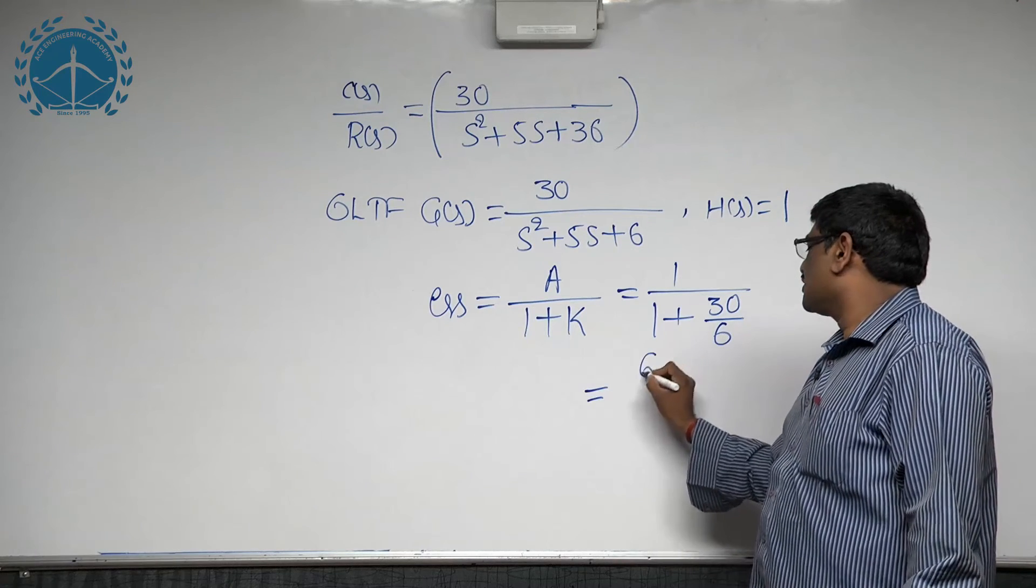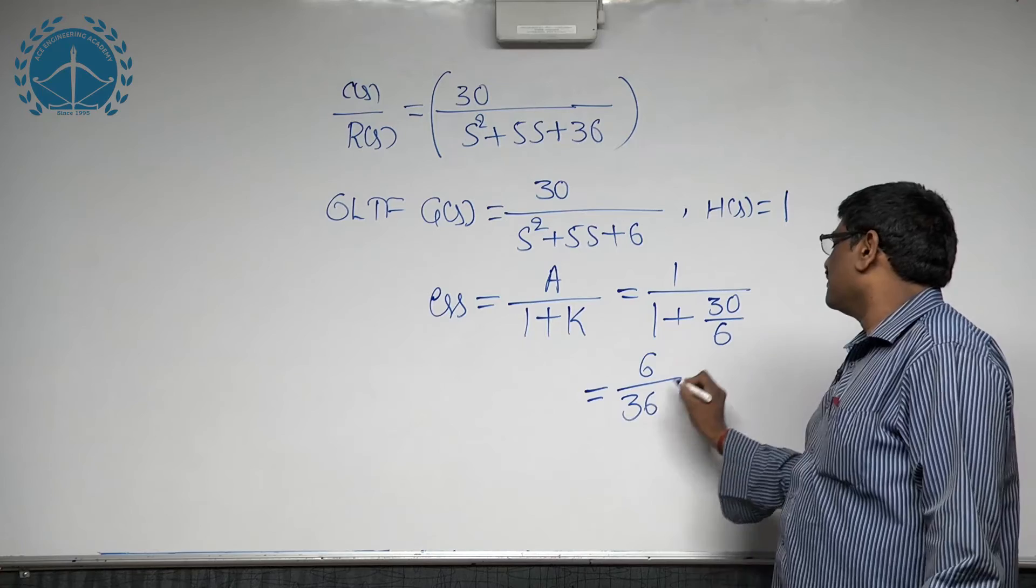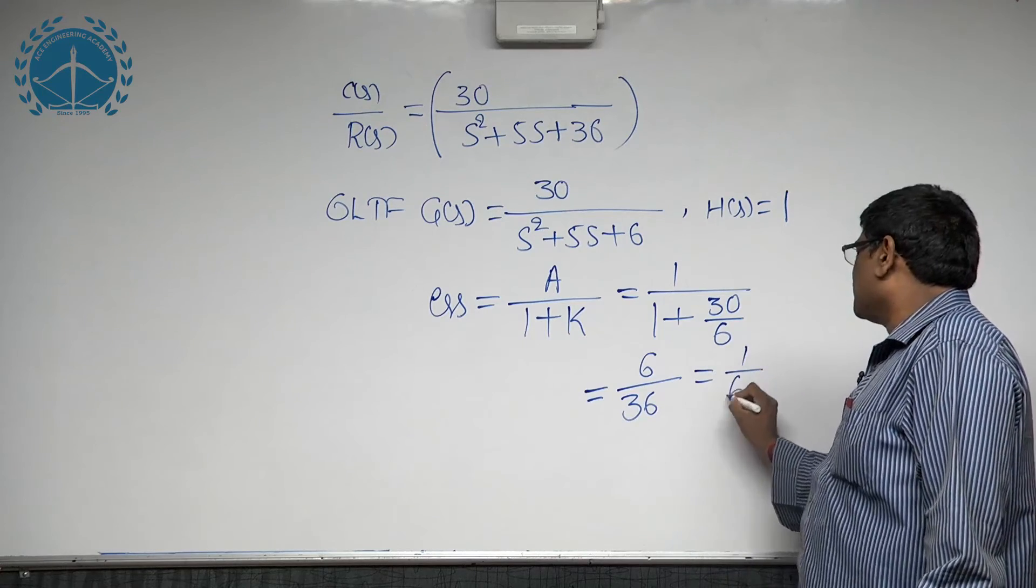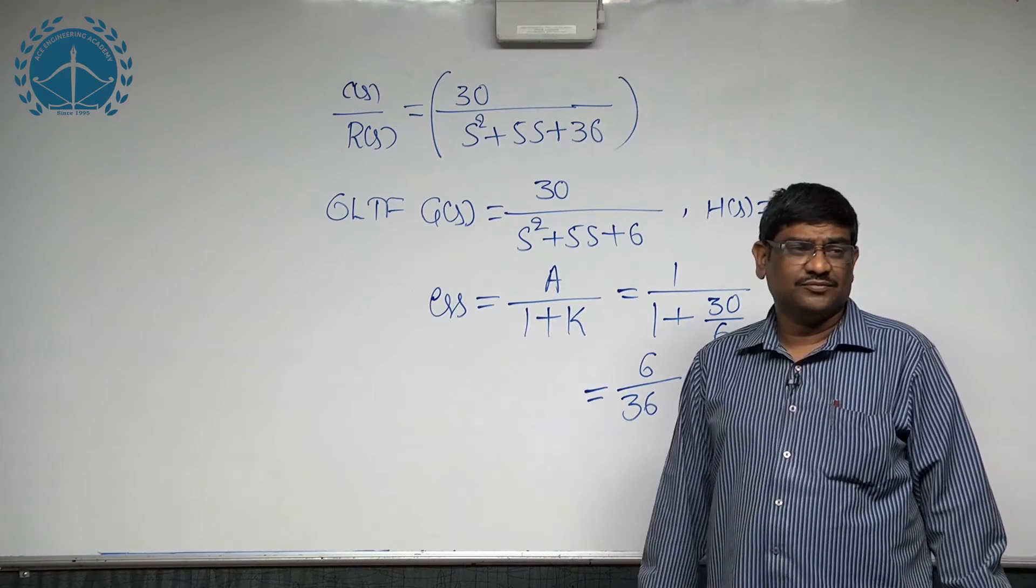Then if you solve this, 6 by 36 will get that equal to 1 by 6.